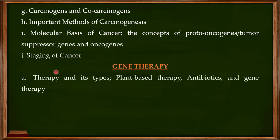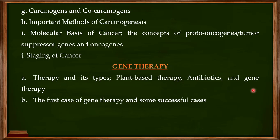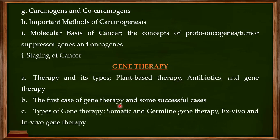The next topic in this course is gene therapy. We'll start with therapy and its types — including plant-based therapies and antibiotics — before focusing mainly on gene therapy. We'll cover the first case of gene therapy and some success stories, then discuss the different types of gene therapy. Gene therapy can be classified on two bases: somatic versus germline gene therapy is one classification.